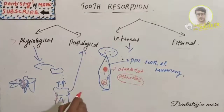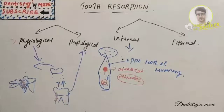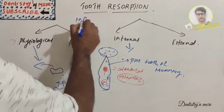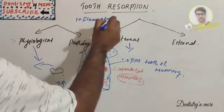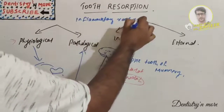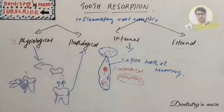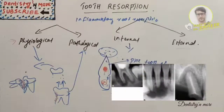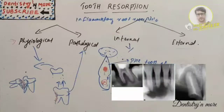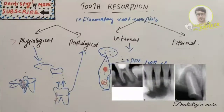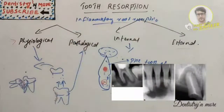Another category is inflammatory root resorption. The necrotic infected pulp provides the stimulus for periodontal inflammation. The most common cause is trauma — if the cementum has been damaged leaving the dentinal tubules exposed, there is open communication between the internal and external surface of the root. Bacteria and their byproducts diffuse through the dentinal tubules and stimulate an inflammatory response.